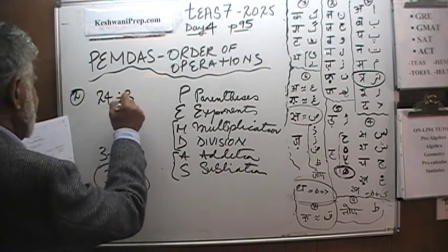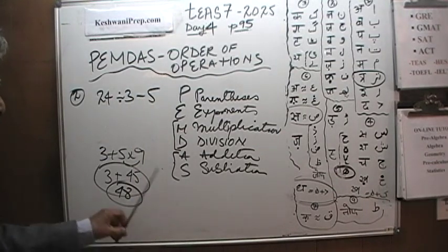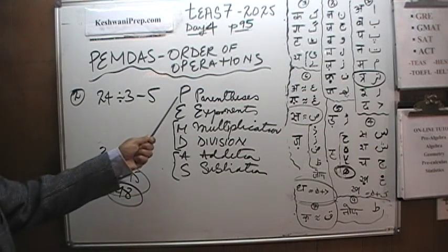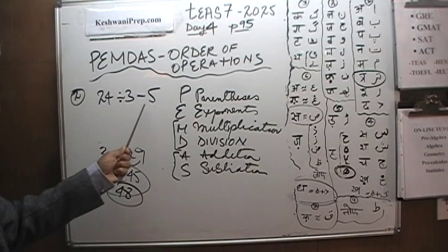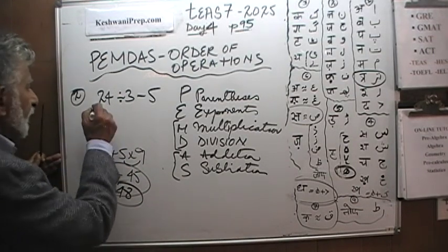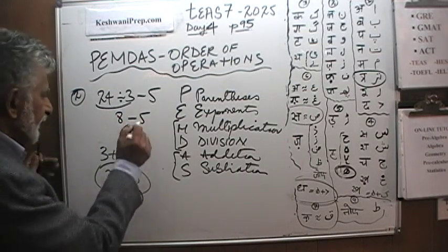Let's do the next one. 24 divided by 3 minus 5. Again, we have a division and we have a subtraction. Which one do we do first? We just go in the order. Parentheses, exponent, division. Aha! Division comes before the subtraction. We are going to do the division first. 24 divided by 3 is going to give us 8. Minus 5 is going to give us 3. The answer is 3.